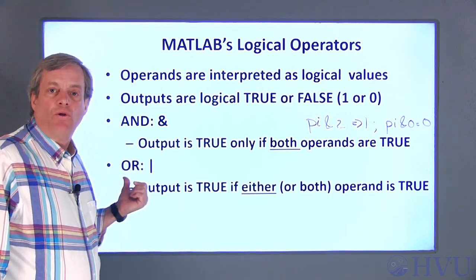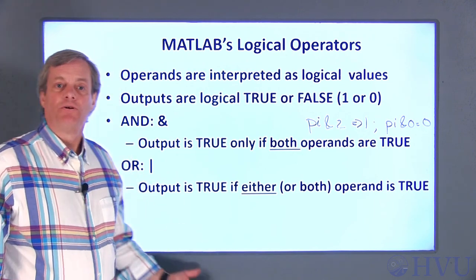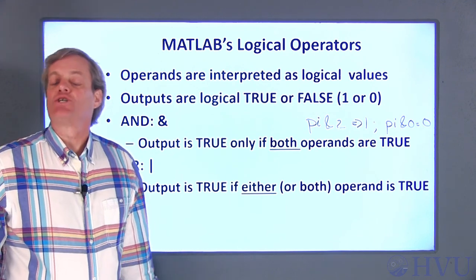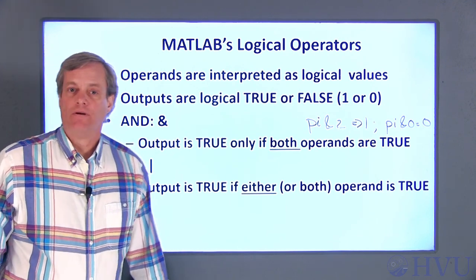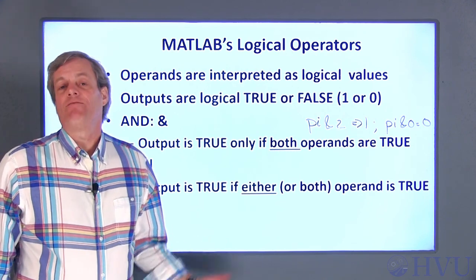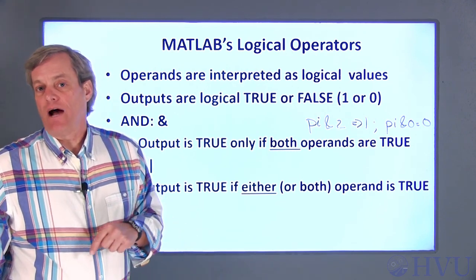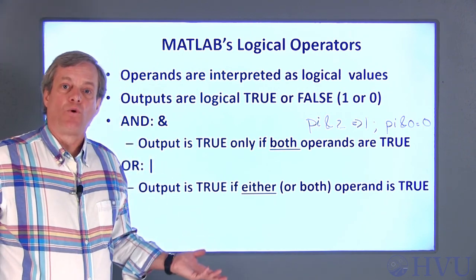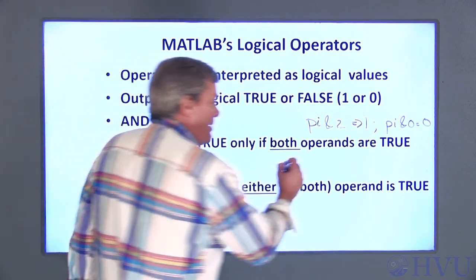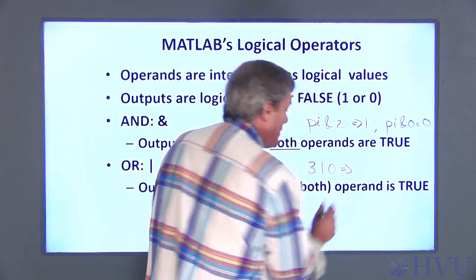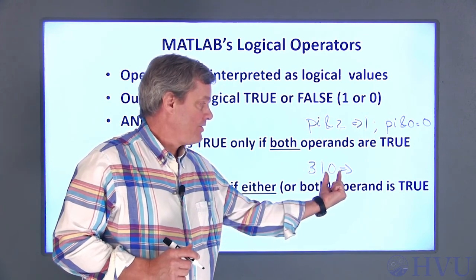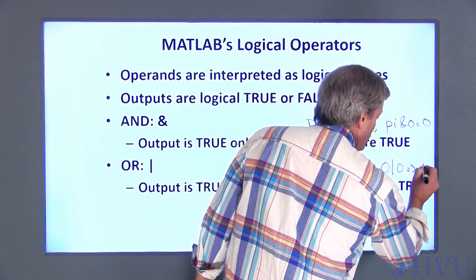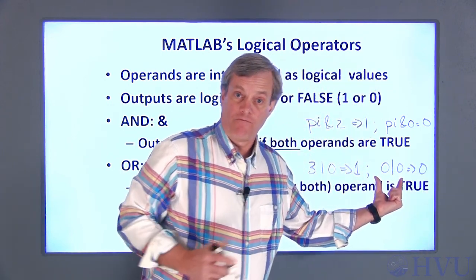The next operator is a logical OR. In MATLAB it's represented by a vertical bar, or pipe symbol |. On most keyboards it's the uppercase version of the backslash key. The result of an OR operation is true if either one or both of the operands is true — as long as at least one condition is met, the result is true. For example, 3|0 is true because 3 is interpreted as true. Only 0|0 will be interpreted as false, since both operands are false.